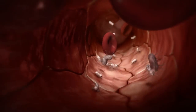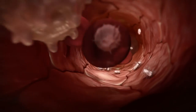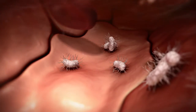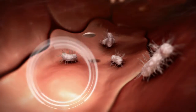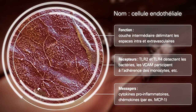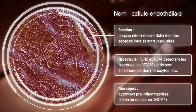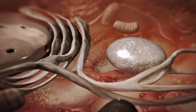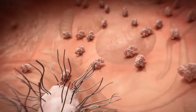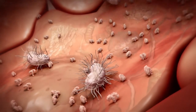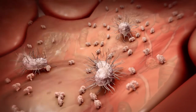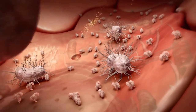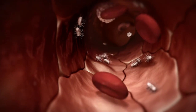Certaines bactéries peuvent pénétrer dans les cellules endothéliales qui tapissent les vaisseaux sanguins. Bien cachées à l'abri du système immunitaire, ces bactéries peuvent se multiplier et infecter d'autres cellules endothéliales de la paroi vasculaire. Celles-ci reconnaissent les bactéries et réagissent en produisant des substances qui favorisent l'inflammation, créant de nouvelles zones d'adhérence à la surface des cellules. Cela attire des cellules sanguines, les monocytes, qui se lient aux cellules endothéliales.